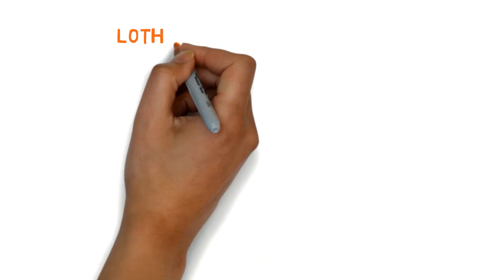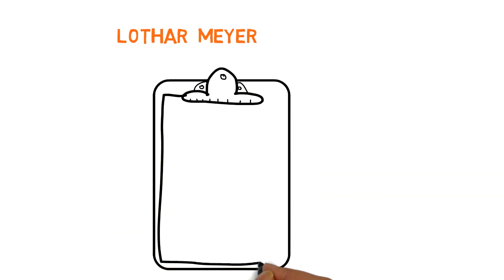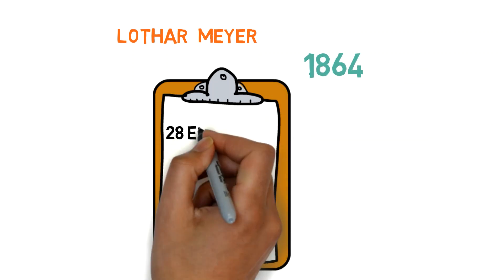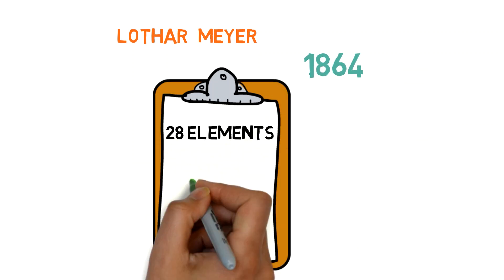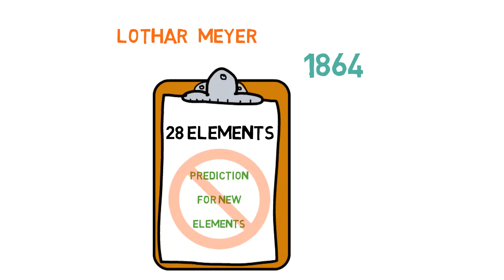Another person to propose a periodic table was Lothar Meyer, who published a paper in 1864 describing 28 elements classified by their valence, with no prediction of new elements.